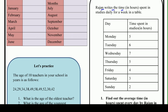Rajan writes the time spent studying daily for a week in a table. On Monday he spends 5 hours, Tuesday 6 hours, Wednesday 7 hours, Thursday 5 hours, Friday 4 hours, Saturday 3 hours, and Sunday 2 hours. So this is the total hours he spends studying in one week — this is his data.